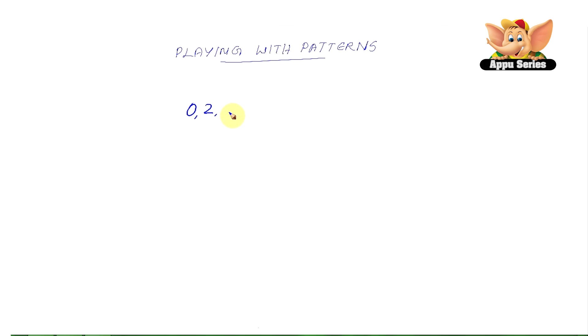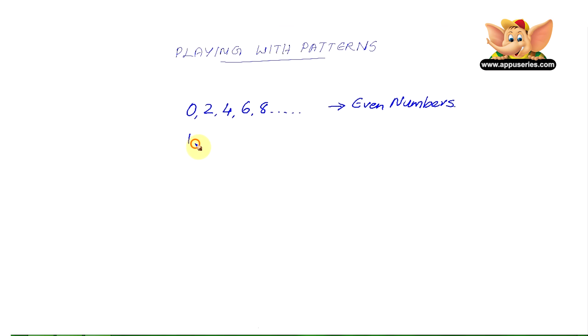All the numbers that end in 0, 2, 4, 6, and 8 are called even numbers. And all numbers that end in 1, 3, 5, 7, and 9 are called odd numbers.